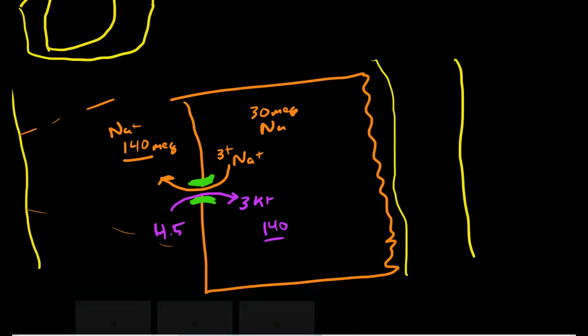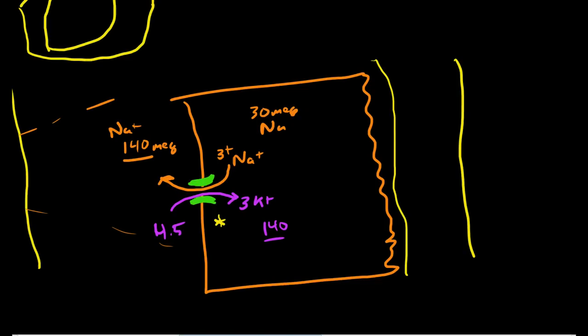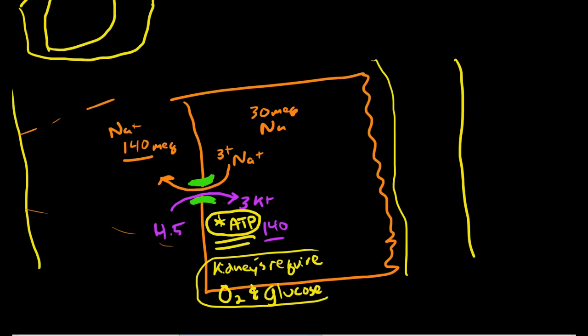This is a sodium-potassium ATPase pump, so this takes energy. And interestingly enough, because the kidneys rely so much on active transport using ATP, they are actually some of the more highly metabolically active cells inside the body. So the kidneys require a lot of oxygen and a lot of energy because of all this ATP. There's lots and lots of mitochondria inside these cells.